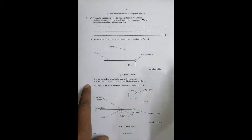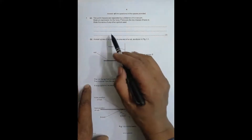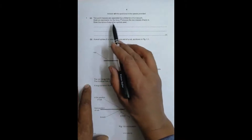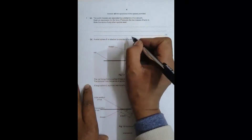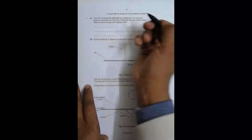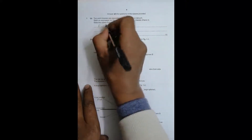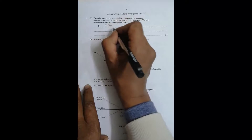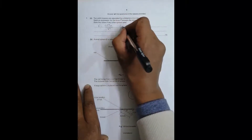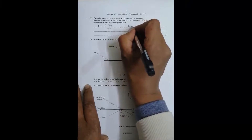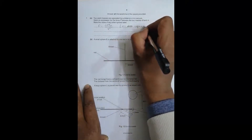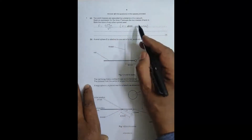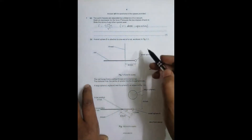It says two point masses are separated by distance x in a vacuum. Write an expression for the force F between the two masses M and m using the usual symbols. The gravitational force is F = GMm/x², where r is the separation between the point masses, and G is the universal gravitational constant whose value is equal to 6.67 × 10⁻¹¹ N·m²/kg².